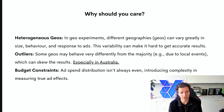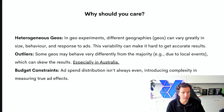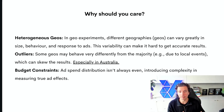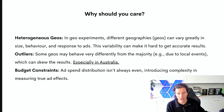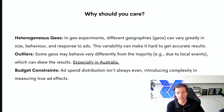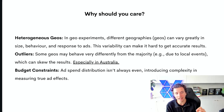Number one is heterogeneous geos: different states have different demographics, different population sizes, different behaviors, and they respond differently to ads — making it difficult to get accurate results. Number two is outliers: a local event could skew all of the results. Number three is budget constraints: ad spend distribution is not even at a geographic level, which introduces additional complexity into pinpointing the true incremental effect.